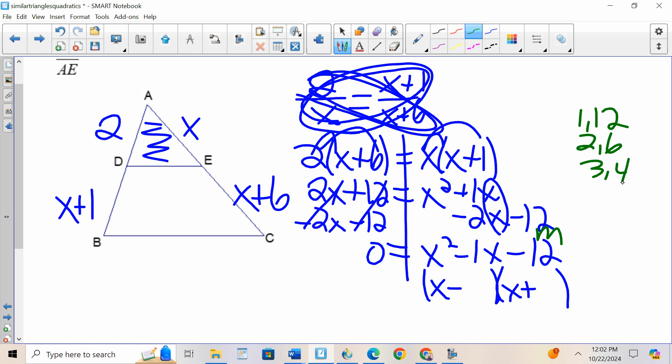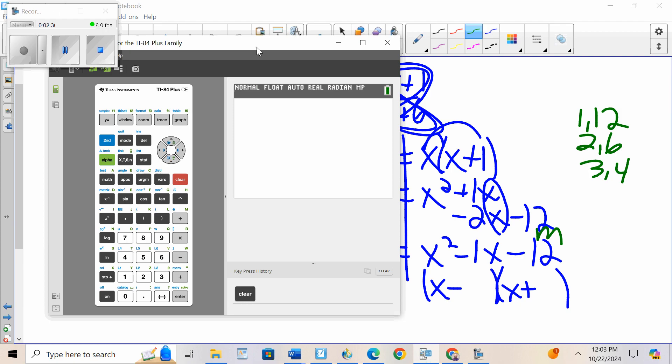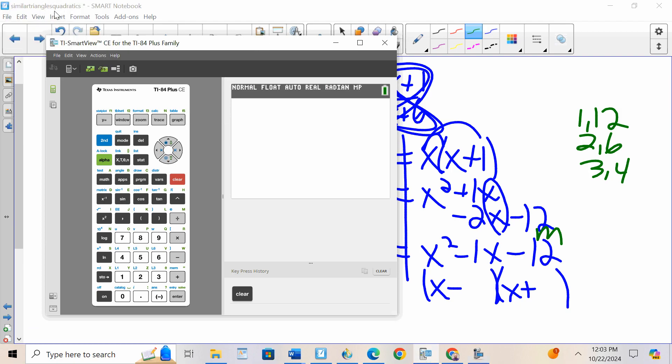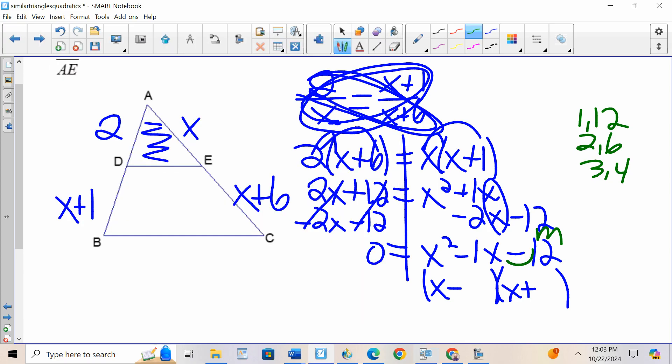I can also use my calculator trick. My calculator trick, I want the numbers to multiply to 12, so I go to Y equals, I type in the number that I want them to multiply by, 12 divided by X. I go to my table, and this lists all my factors of 12. Which pair subtracts to 1? 3 and 4, bigger number goes first.